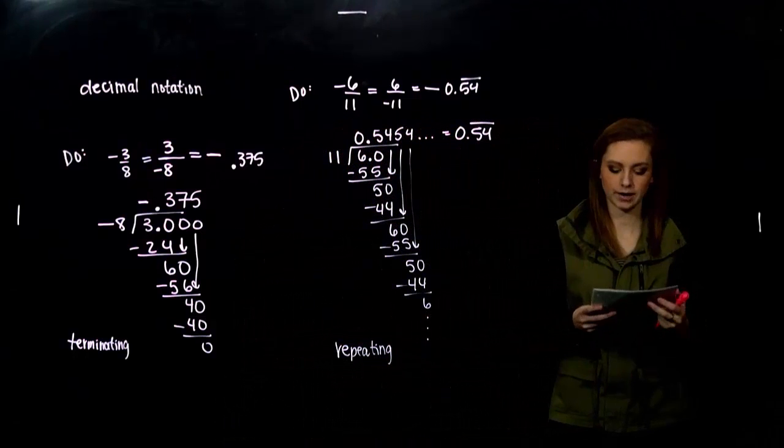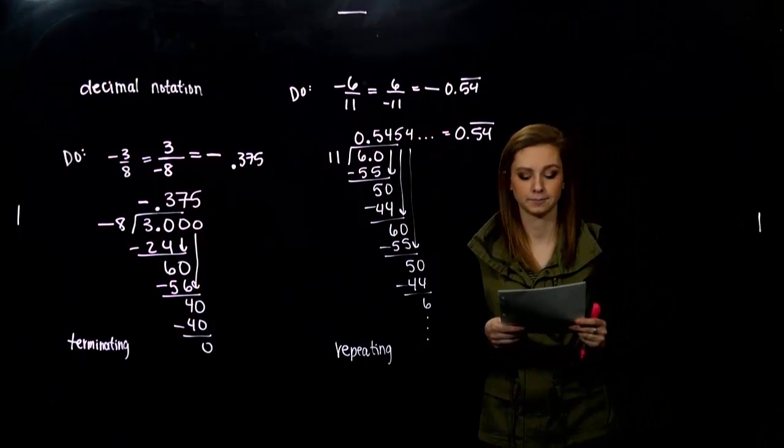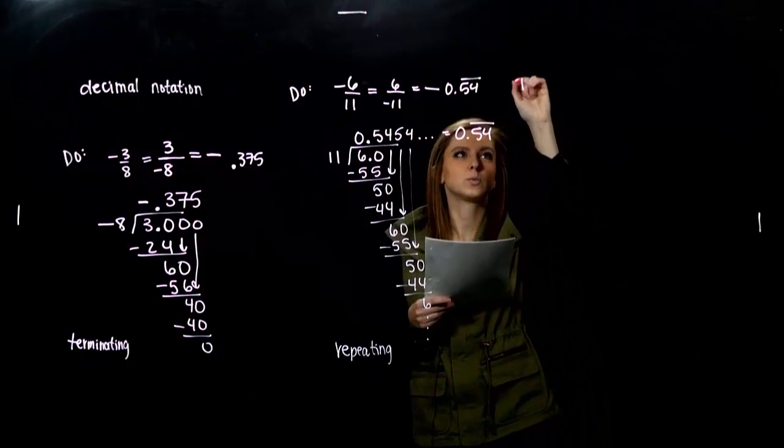So, two for you to try. Convert to decimal notation, zero divided by eight, and four divided by three. So, with that first one, zero divided by eight.